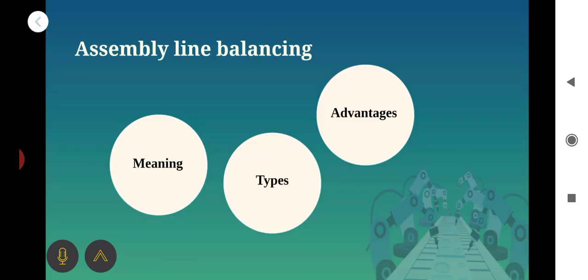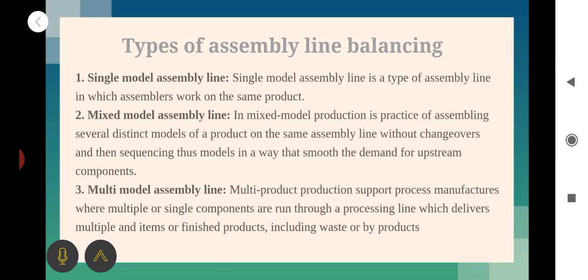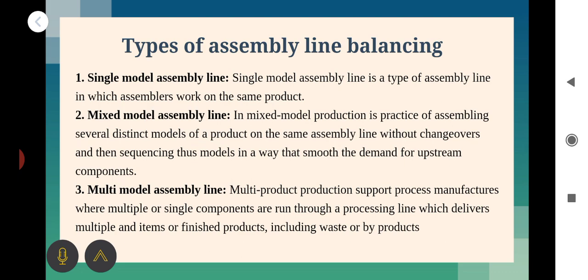There are three types of Assembly Line Balancing. The first one is Single Model Assembly Line Balancing, the second is Mixed Model Assembly Line, and the third is Multi Model Assembly Line. Single Model means it is a type of assembly line in which assemblers work on the same product — only one product or same products are there.